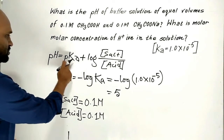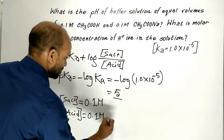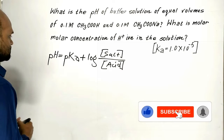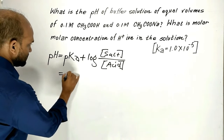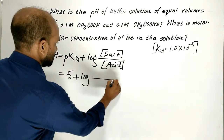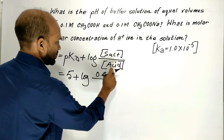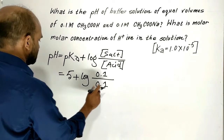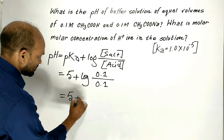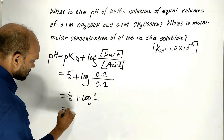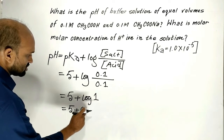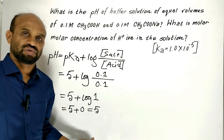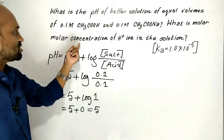Now we have pKa, concentration of salt, and concentration of acid. Putting these values into the Henderson-Hasselbalch equation: pH = pKa + log([salt]/[acid]) = 5 + log(0.1/0.1) = 5 + log(1) = 5 + 0 = 5. So the pH of the buffer solution is 5.